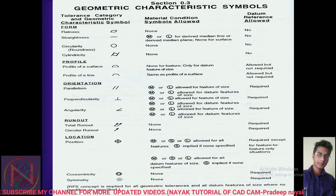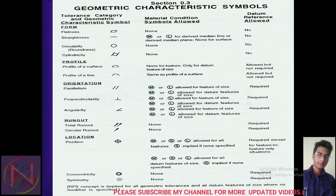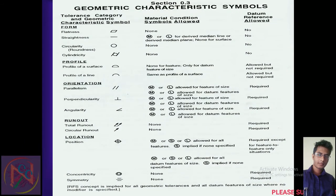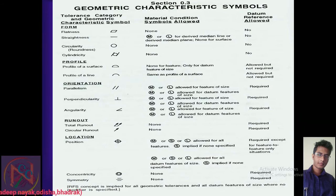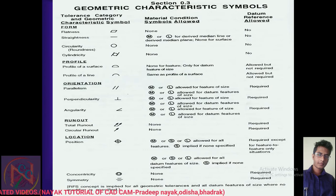Under form, the GD&T characteristics are flatness, straightness, circularity, and cylindricity — note that circularity and roundness are the same. The second column covers material condition symbols, which are allowed in GD&T. The third feature is the datum reference, which is also allowed.